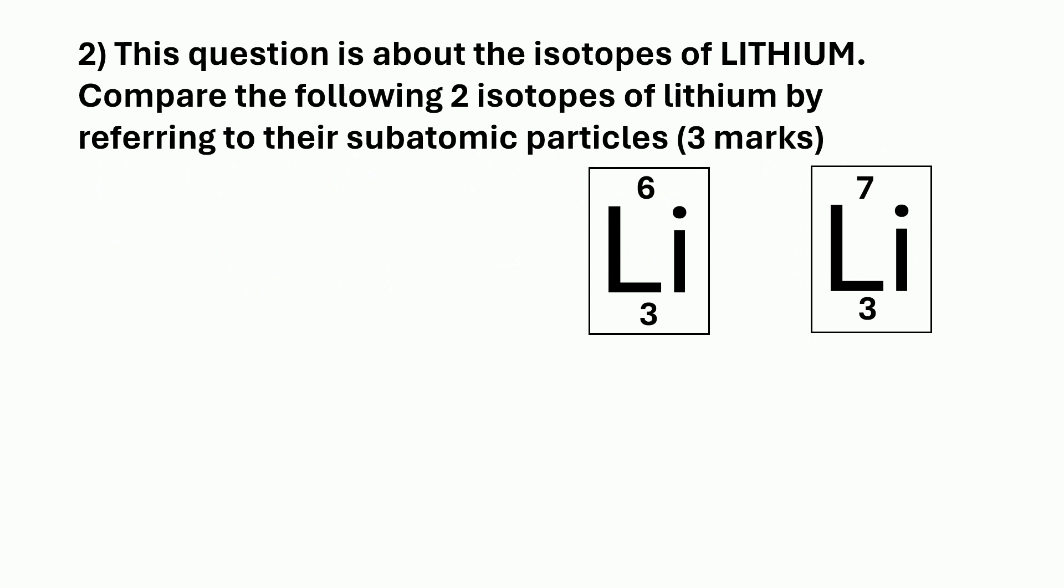Question 2. This question is about the isotopes of lithium. Compare the following two isotopes of lithium by referring to their subatomic particles. And there's three marks here, so that would be one mark for talking about the protons and comparing them, one mark for comparing the numbers of neutrons, and one mark for comparing the numbers of electrons.